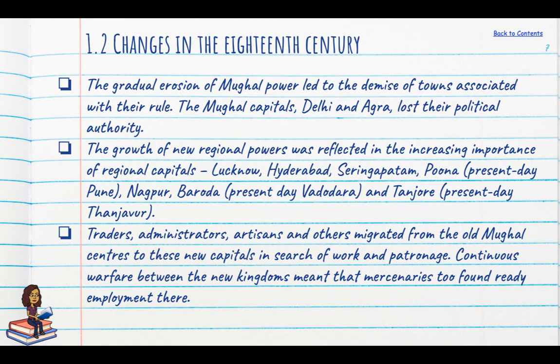By the 18th century, the Mughal Empire was in rapid decline, which led to a shift of power from Delhi, Agra and Lahore to more regional centres. Regional powers were growing and cities like Lucknow, Hyderabad, Shrirangapatnam, Pune, Nagpur, Baroda and Tanjur became pre-eminent — not only known for their crafts or commerce, but also as important centres of administration.